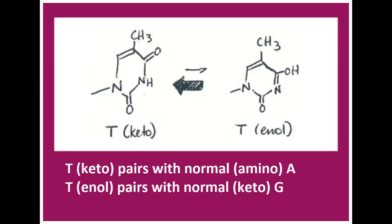Students, bases adenine, guanine, cytosine, and thymine are always in the keto or amino forms. So you can see thymine in keto form pairs with normal amino adenine.